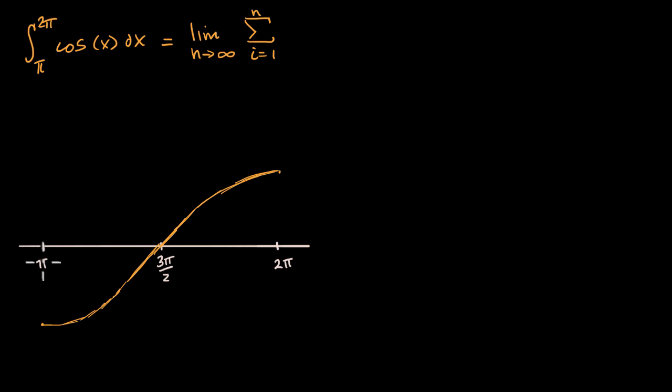And so this definite integral represents the area from π to 2π between the curve and the x-axis. And you might already know that this area is going to be, or this part of the definite integral would be negative. And this would be positive and they'll cancel out.